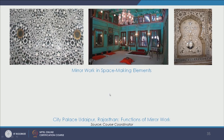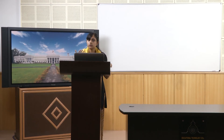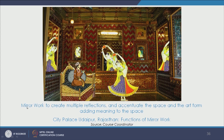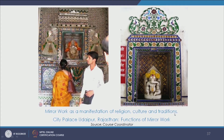Just to understand how this mirror work functions and what are the different functions and purposes of mirror work — not just aesthetics, but some other functional aspects and technical details. We see mirror work functioning as space making elements — it enhances the particular space making element, highlights it, focuses it. Like a niche gets highlighted if there is mirror work; the space making element becomes distinctly visible and comes into focus. We see mirror work done to create multiple reflections and accentuate the space and the art form which adds meaning to the space. Mirror work has also been used in this palace as a manifestation of religion, culture and traditions — that also mirror work is enhancing and facilitating.